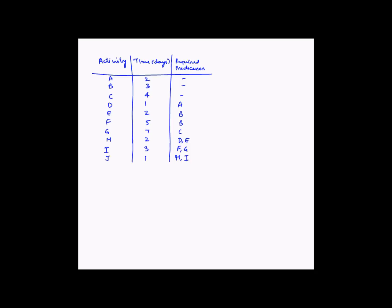Activity E has a duration of two days and is dependent on activity B. Activity F is dependent on activity B and has a duration of five days. Activity G needs seven days and is dependent on activity C. Activity H has a duration of two days and is dependent on activities D and E. Activity I has a duration of three days and is dependent on activities F and G. Activity J has a duration of one day and is dependent on activities H and I.